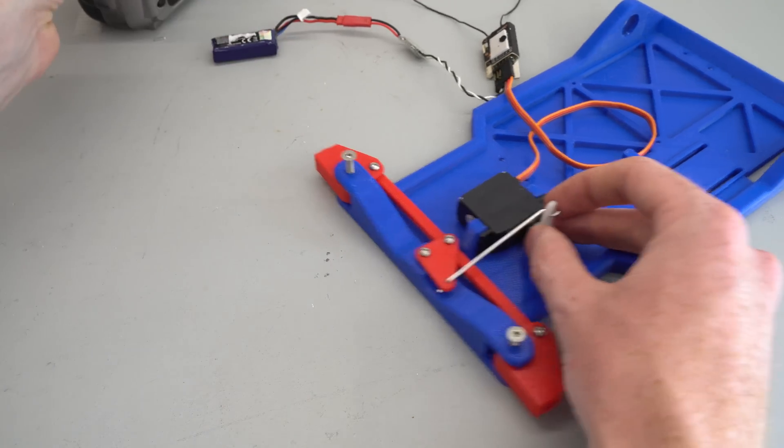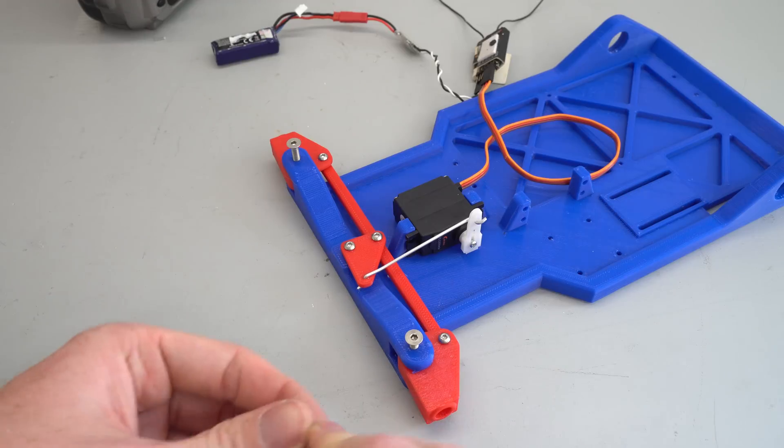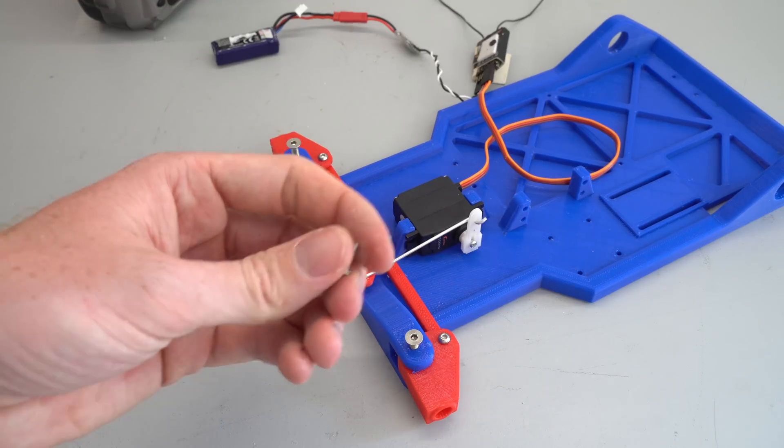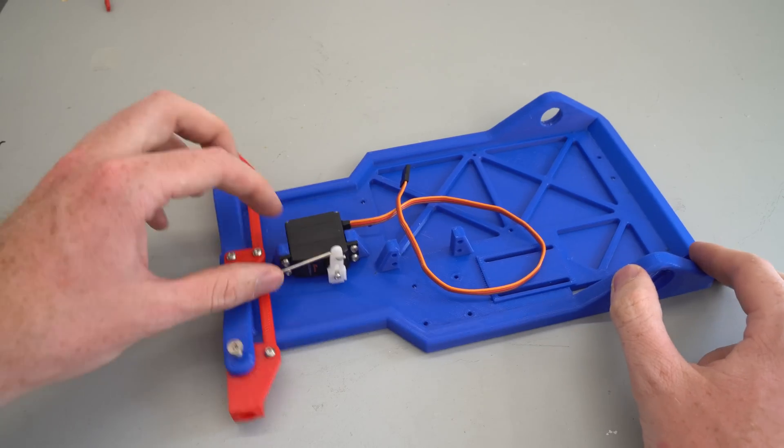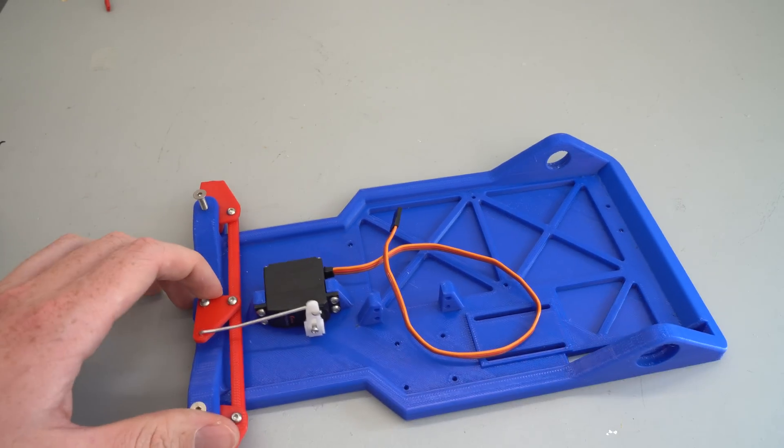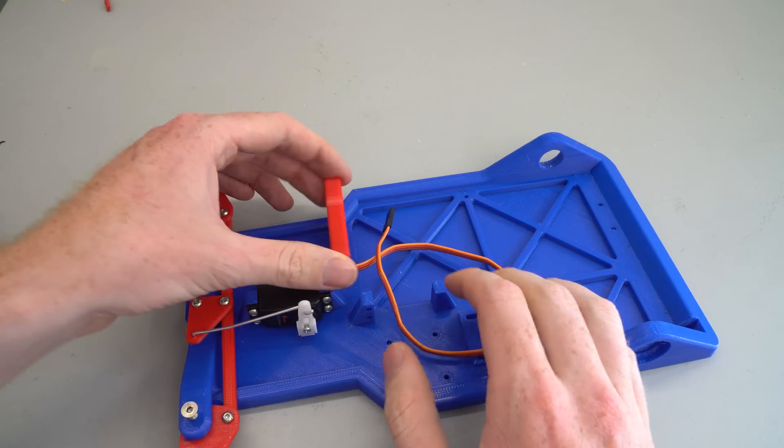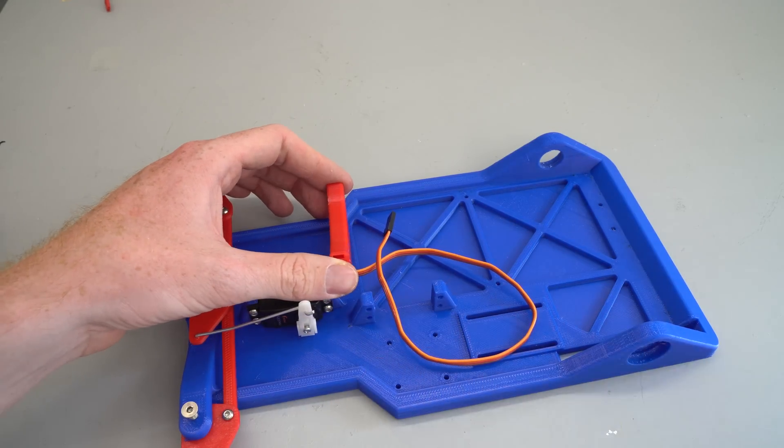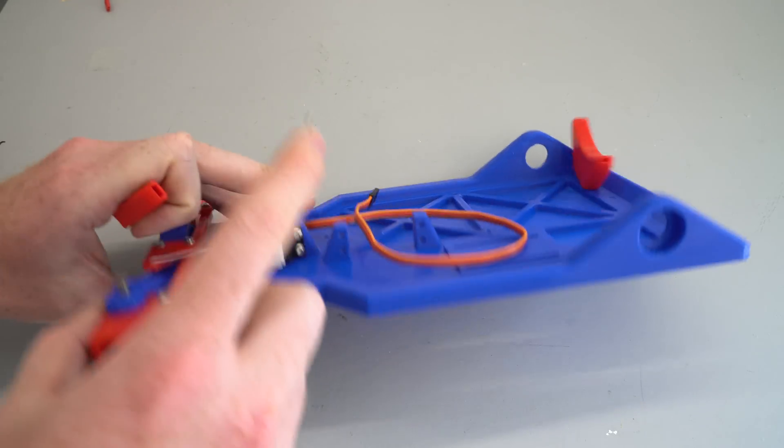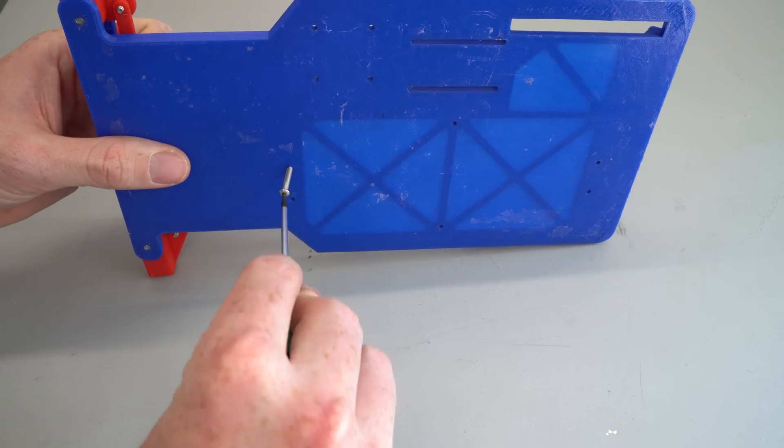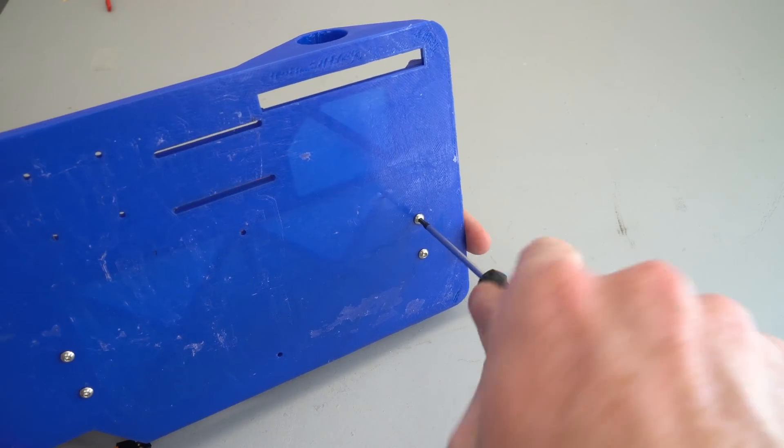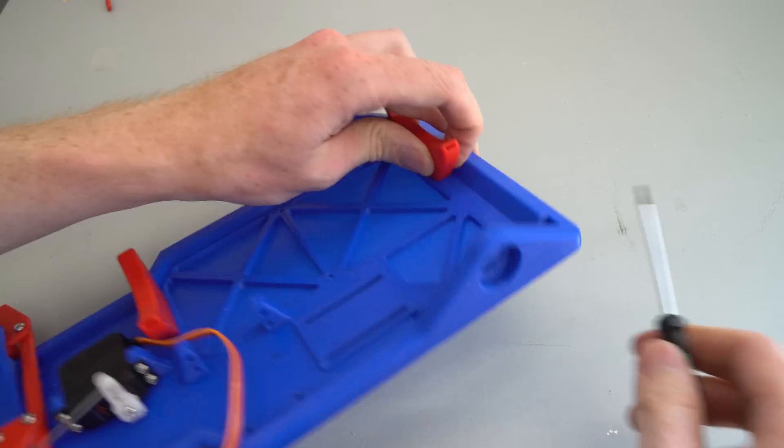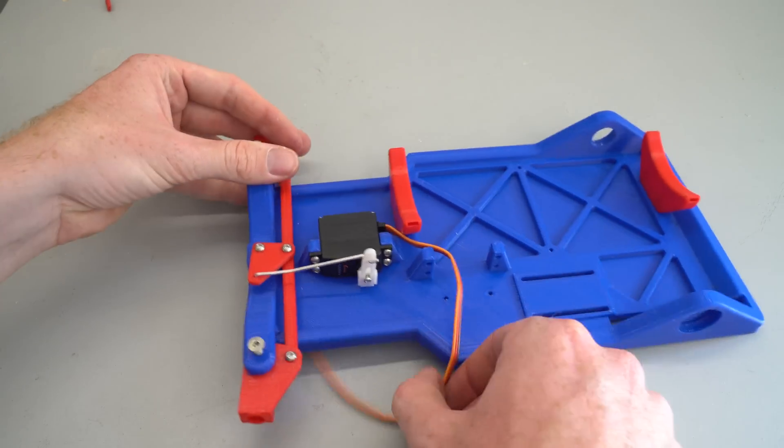Okay, so now the servo's popped out. I'm just going to mount that in position with a few screws. So the steering mechanism is all done and now what I'm going to do is mount these brackets which will hold the plastic bottle in position.